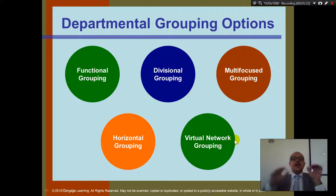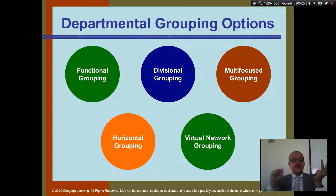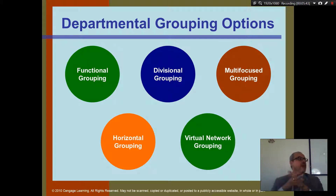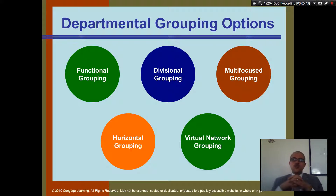On the exam, it will show you A — functional, B — divisional, C — multifocused, D — horizontal, and E — virtual network. You will have to identify which type a given company is. Let's go through each one.